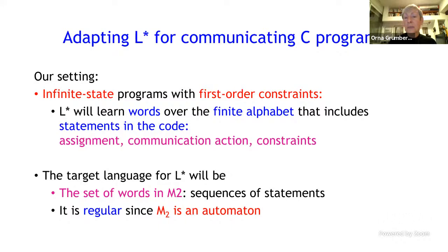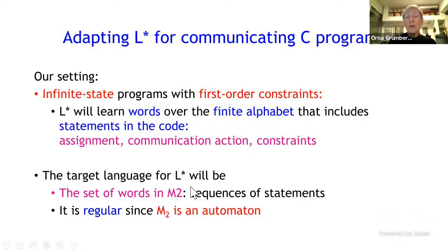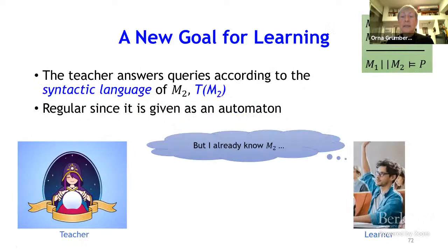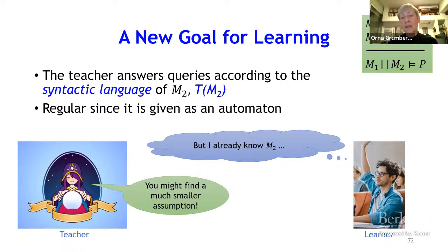We choose to learn the set of words in M2, which are sequences of statements, and it is regular because M2 is an automaton. So we find a regular language over a finite alphabet and can apply L-star. One might ask: since we already know M2, why learn it? The answer is that we may find a much smaller assumption for the assume-guarantee rule. The goal of applying L-star is to find an assumption for the assume-guarantee rule, and this assumption may be much smaller than M2.